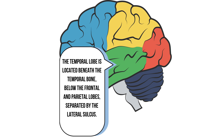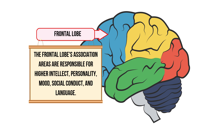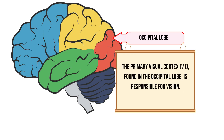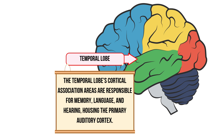The frontal lobe association areas are responsible for higher intellect, personality, mood, social behaviour, and language. The cortical association areas in the brain are responsible for managing language and calculation functions in the dominant hemisphere, while handling visuospatial functions such as two-point discrimination in the non-dominant hemisphere. The primary visual cortex V1, found in the occipital lobe, is responsible for vision. The cortical association areas of the temporal lobe are responsible for memory, language, and hearing, and include the primary auditory cortex.